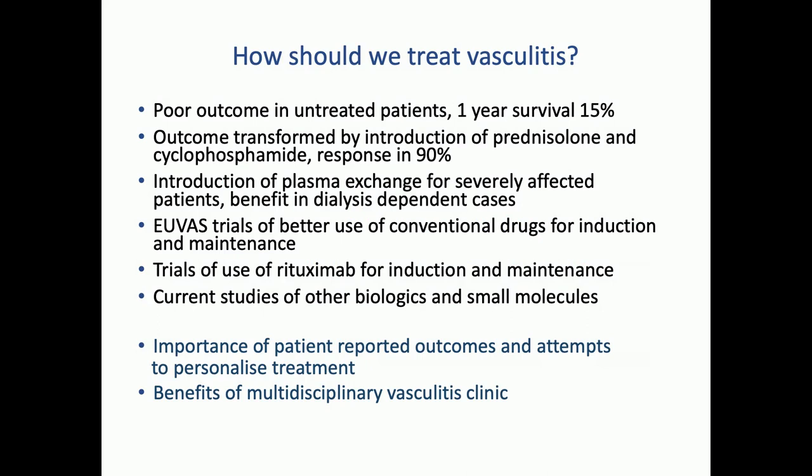How do we treat vasculitis? In the 1950s and 60s, it was an acute and lethal disease — one-year survival was about 15%. Then in the 1970s at the NIH, Fauci and colleagues transformed the outcome by introducing prednisolone and cyclophosphamide, to which there was a response in up to 90% of people. At Hammersmith, Martin Lockwood and others introduced plasma exchange for severely affected cases. Then the EUVAS trials came online — really ahead of the game worldwide — followed by more global trials of rituximab and other biological agents. I also want to emphasise our increasing focus on patient-reported outcomes and personalised treatment.